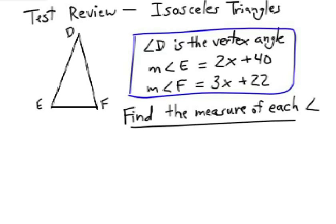Well the first idea of course is to make sure you mark up what they give you and it looks like measure of angle E is 2x plus 40. Measure of angle F is 3x plus 22.